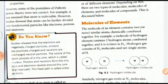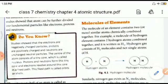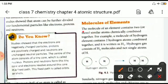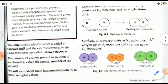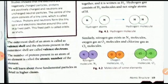A molecule of an element contains two or more similar atoms chemically combined together. For example, a molecule of hydrogen contains two hydrogen atoms combined together and is written as H2. Hydrogen gas consists of H2 molecules and not single atoms of H — H + H forms a hydrogen molecule. Similarly, nitrogen gas exists as N2, oxygen as O2, and chlorine as Cl2, as visible from the chart.